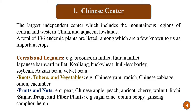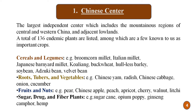The first is the Chinese center, which is the largest independent center. It includes the mountainous regions of Central and Western China and adjacent lowlands. A total of 136 endemic plants are listed in this center, among which several are important crops. These include cereals and legumes, root tubers and vegetables, and fruits and nuts.